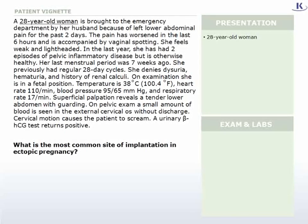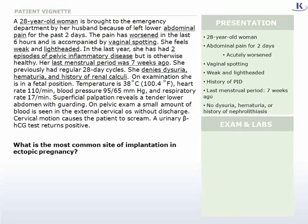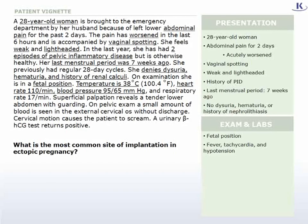A patient presents to the emergency department with abdominal pain that began two days ago. The pain has worsened over the past several hours and is accompanied by vaginal spotting. She has become weak and lightheaded. Her gynecologic history is significant for two episodes of pelvic inflammatory disease (PID). Although her menstrual cycle is regular, her last period was seven weeks ago. She denies dysuria, hematuria, or history of nephrolithiasis. The patient is in obvious pain, as evidenced by her fetal position. She is febrile, tachycardic, and hypotensive.